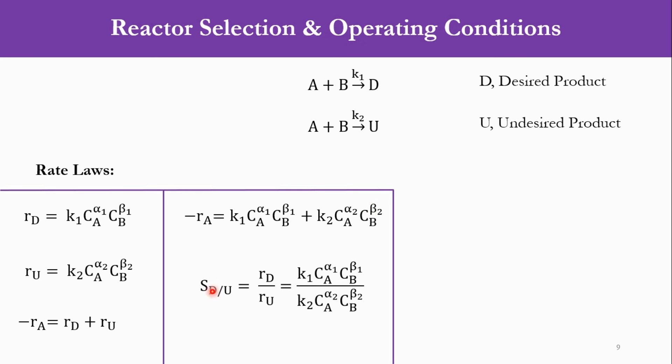Substituting the values, minus R A equals K1 CA raised to power alpha 1, CB raised to power beta 1, plus K2 CA raised to power alpha 2, CB raised to power beta 2. Or we can rewrite it as SD by U equals R D over R U, which equals KD over KU, CA raised to power alpha 1 minus alpha 2, and CB raised to power beta 1 minus beta 2. For simplicity or comparison with the previous system, I have represented it as KD and KU. Otherwise, you can write it as K1 over K2 as well. And obviously, our objective is to maximize the value of this instantaneous selectivity.